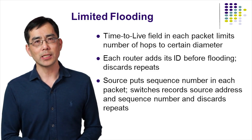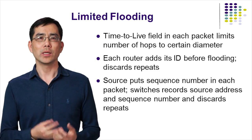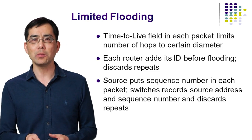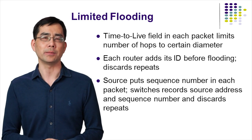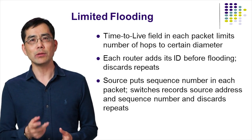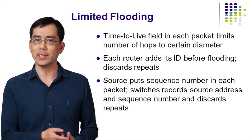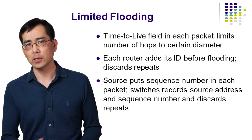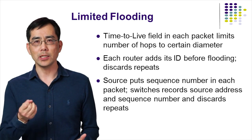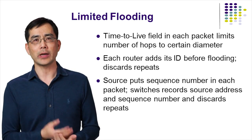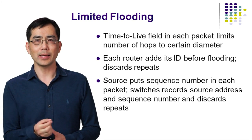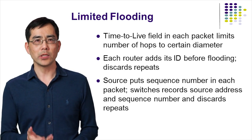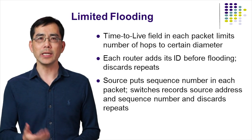To reduce resource consumption due to flooding, one simple method is to use a time-to-live field in each packet that limits the number of hops to a certain diameter. Each router decrements the time-to-live by one before flooding the packet. If the value reaches zero, the router discards the packet. Another approach is for each router to add its identifier before flooding and discard the packet if it already contains that router's identifier. Furthermore, sequence numbers can be used for ease of implementation.